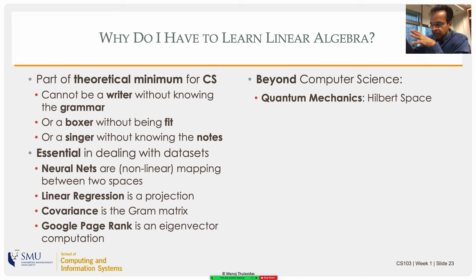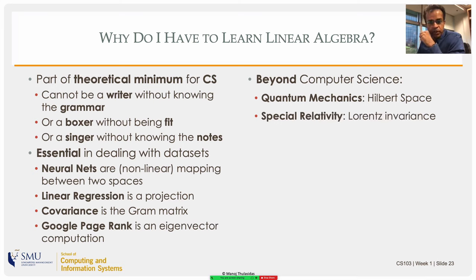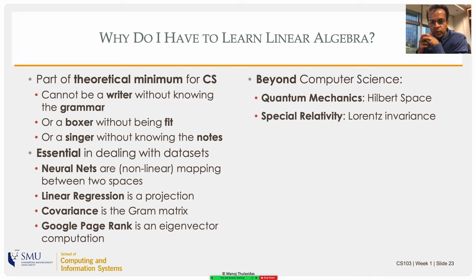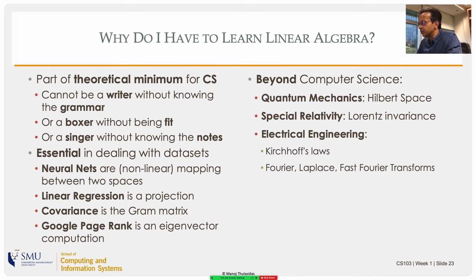It goes beyond computer science. The mathematical foundation of quantum mechanics is actually linear algebra. The vectors in quantum mechanics are not column vectors as in our context — they are functions, the dot product is an integral, and the space where these vectors live is called a Hilbert space, which is a complex space. But with those qualifications, the rest is basically just linear algebra, identical to what we do. Einstein's theory of special relativity is also essentially linear algebra — a rotation in four dimensions.